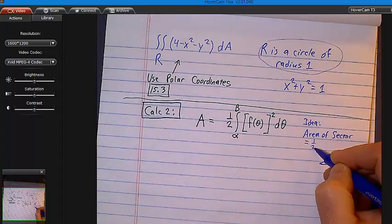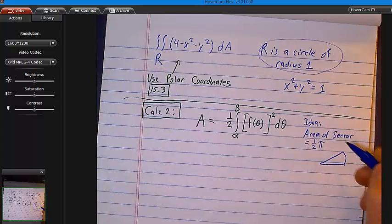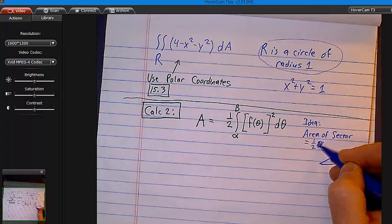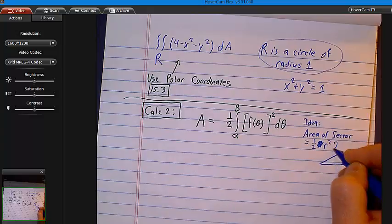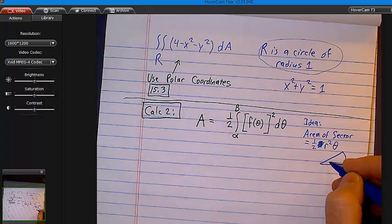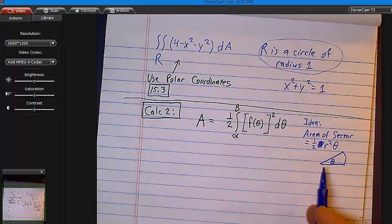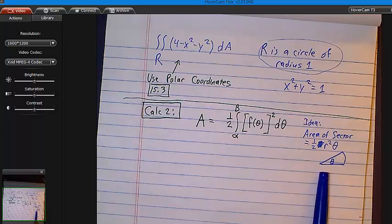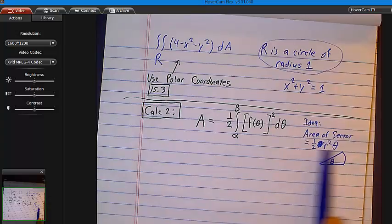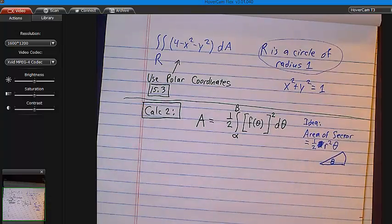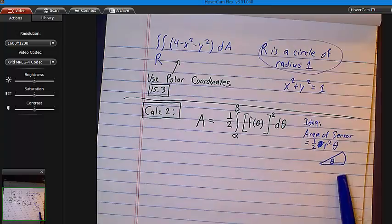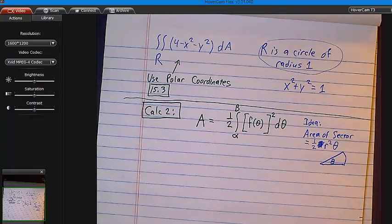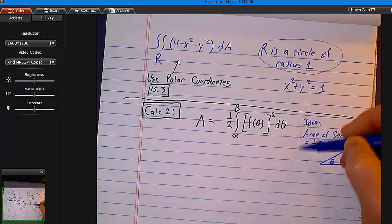The idea comes from this formula. The area of a sector, what's a sector? A wedge of a circle, a piece of a pie. The area of a sector, do you guys know the formula for that? It's one-half R squared theta, where theta is the angle.